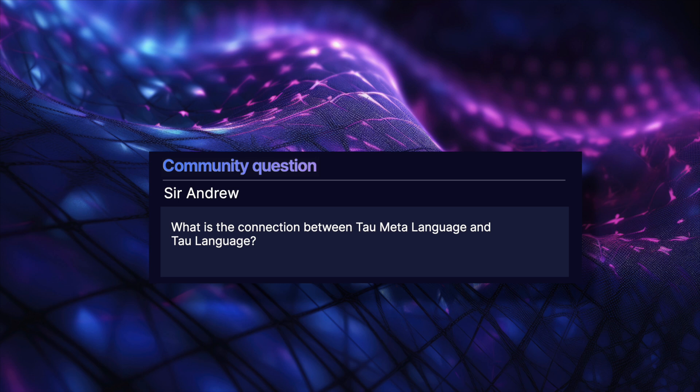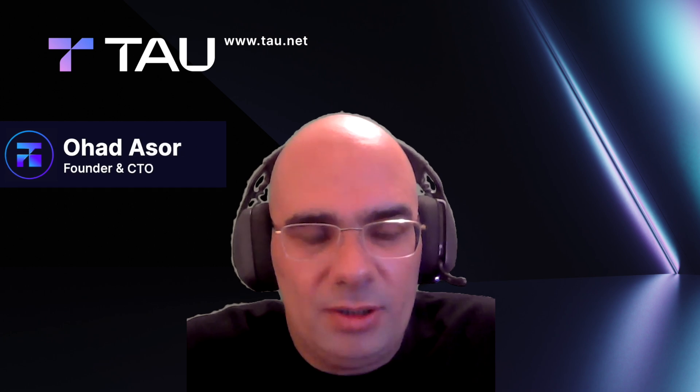The next question is from Sir Andrew: what is the connection between Tau metalanguage and Tau language? For now, we use parts of TML in order to use building blocks in the implementation of the Tau language. The Tau language has many of the abilities that TML does — in particular, over a fixed universe, the Tau language can do anything that TML does. We will see in the future how this connection will grow, but for now it's only for taking code parts from TML, and Tau can already do a lot of the things that TML can do.